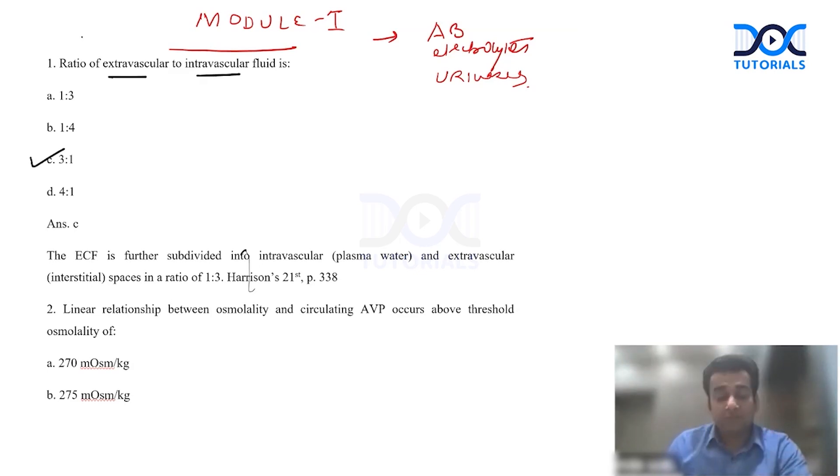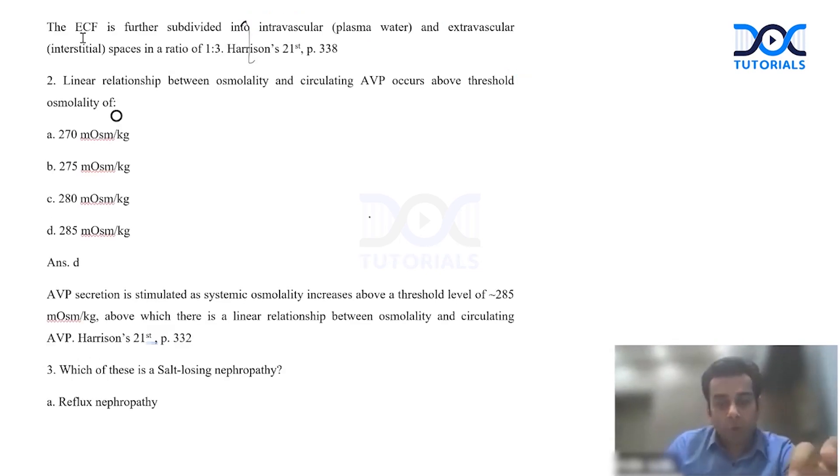This is a fairly basic question which we have studied in physiology but which is important. The next question is: linear relationship between osmolality and circulating AVP occurs above threshold osmolality of dash. Basically the question is that the relationship between the serum osmolality and the AVP.